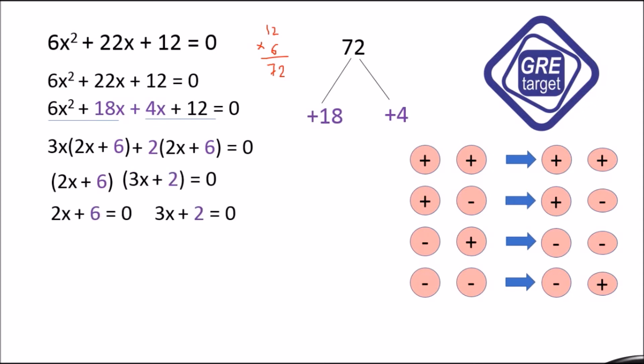So 2x + 6 = 0 gives 2x = -6; divide both sides by 2 so x = -3. And 3x + 2 = 0 gives 3x = -2; divide both sides by 3 so x = -2/3.